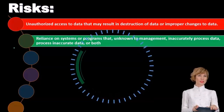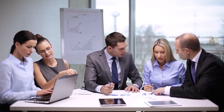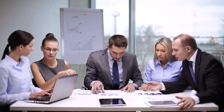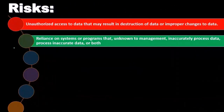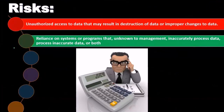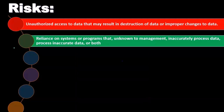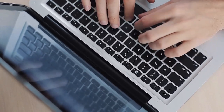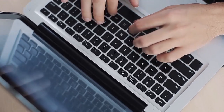Another risk is reliance on systems or programs that, unknown to management, incorrectly process data, process incorrect data, or both. With very complex database systems, management no longer performs the calculation itself but depends on the output number. This means the data input required to generate those calculations could be off, and once results come out, management may not be able to interpret them properly because they're no longer going through the calculations themselves. Our ability to interpret complex calculations can deteriorate as we become more dependent on the computer.